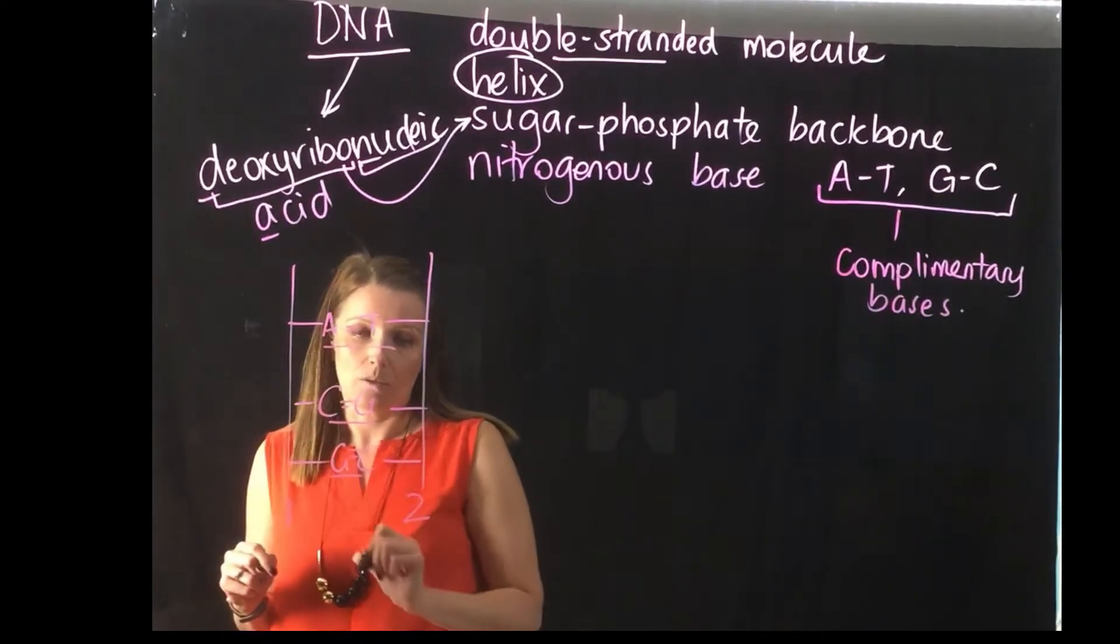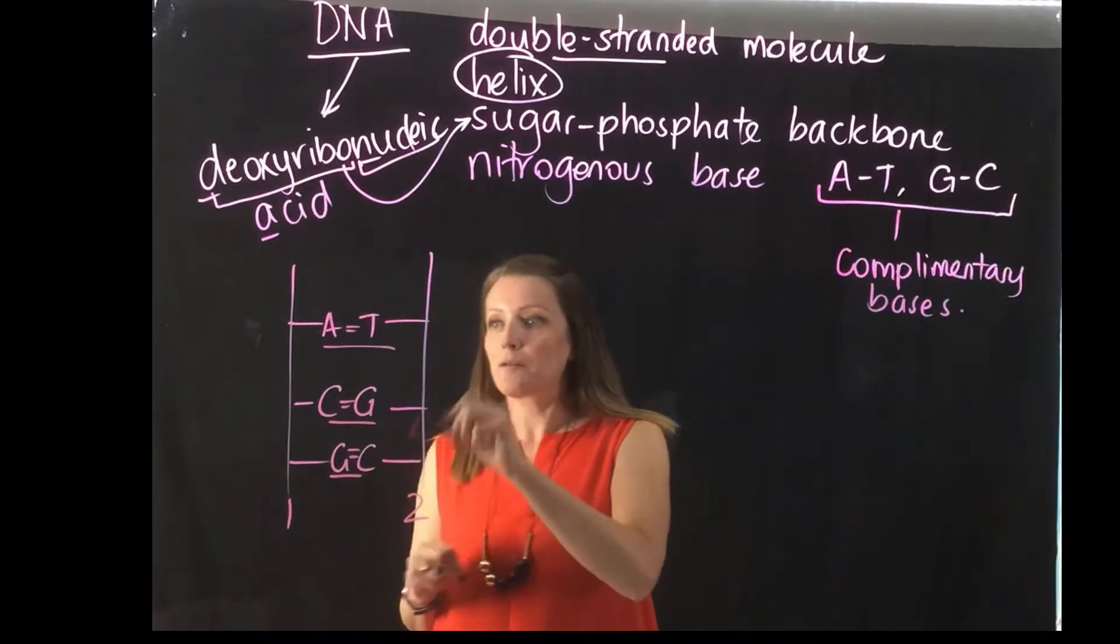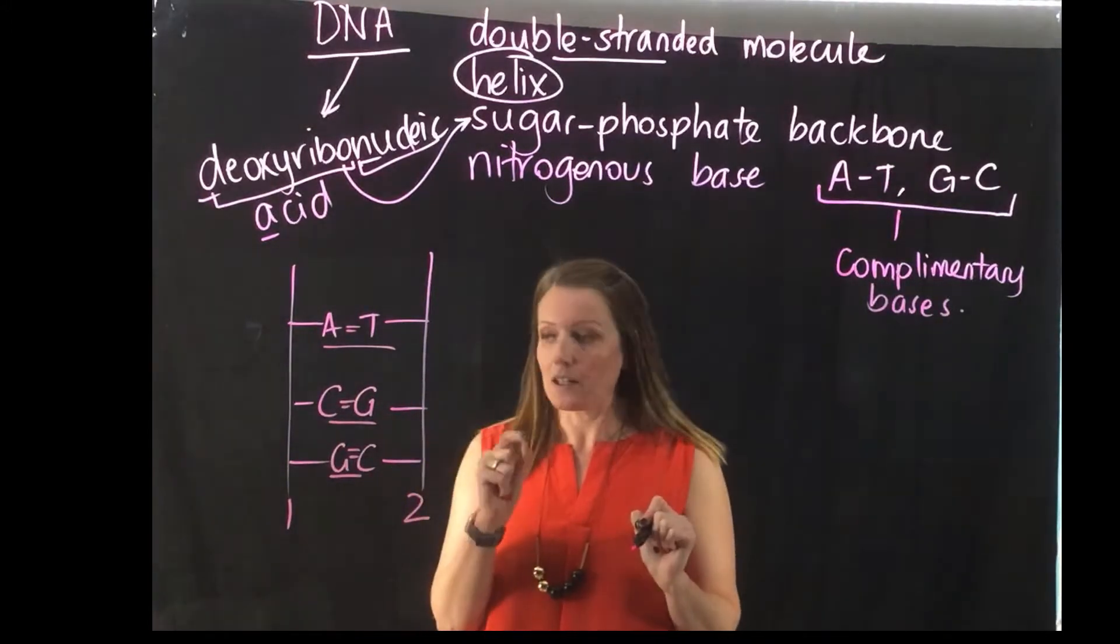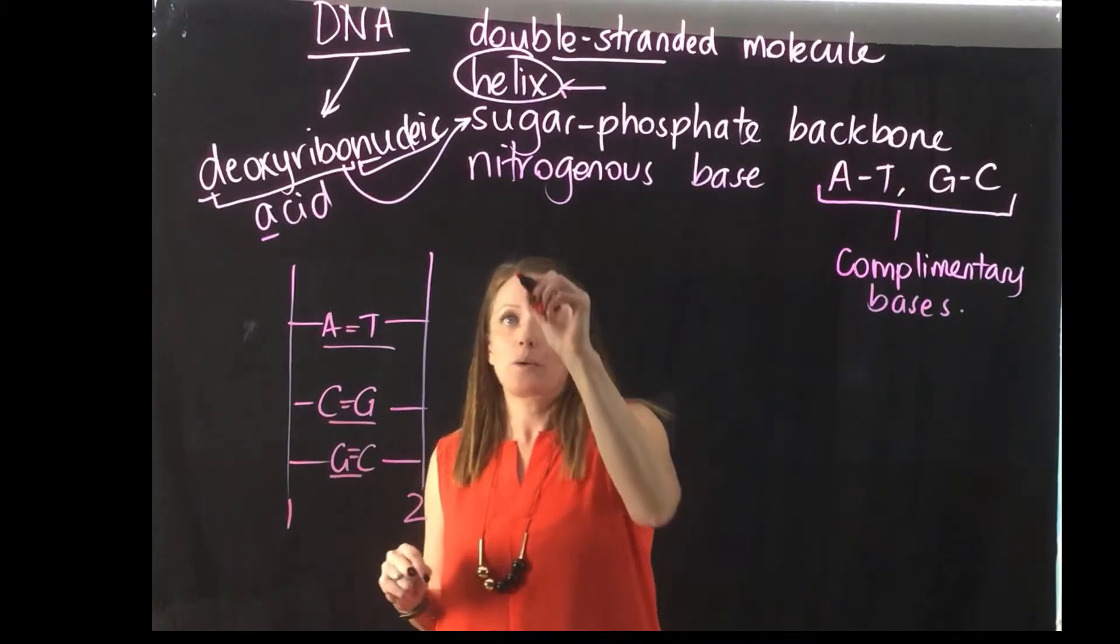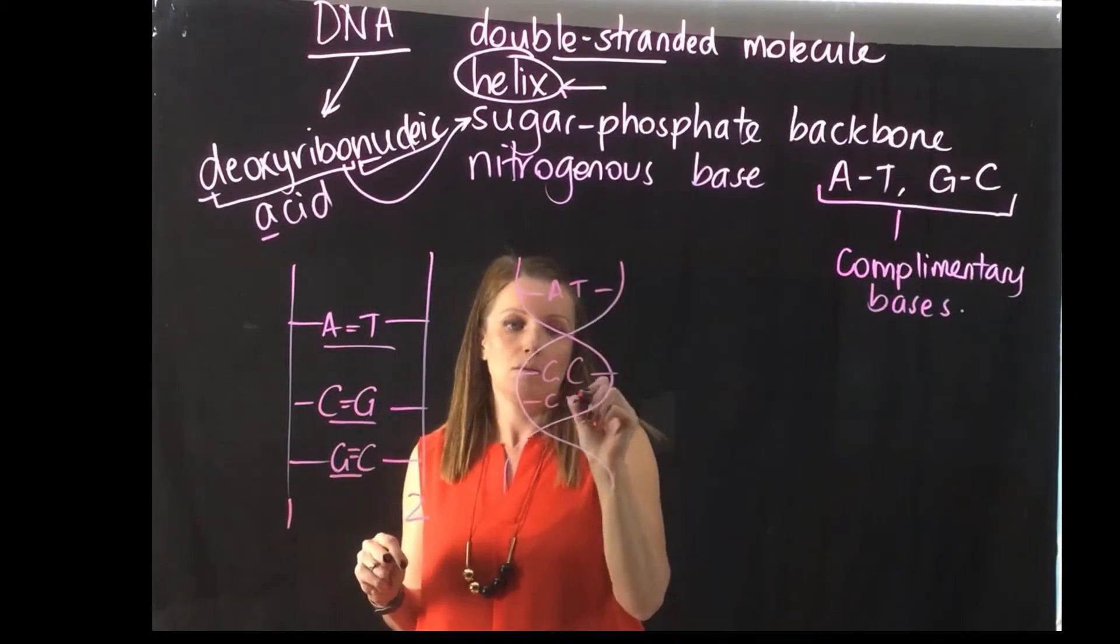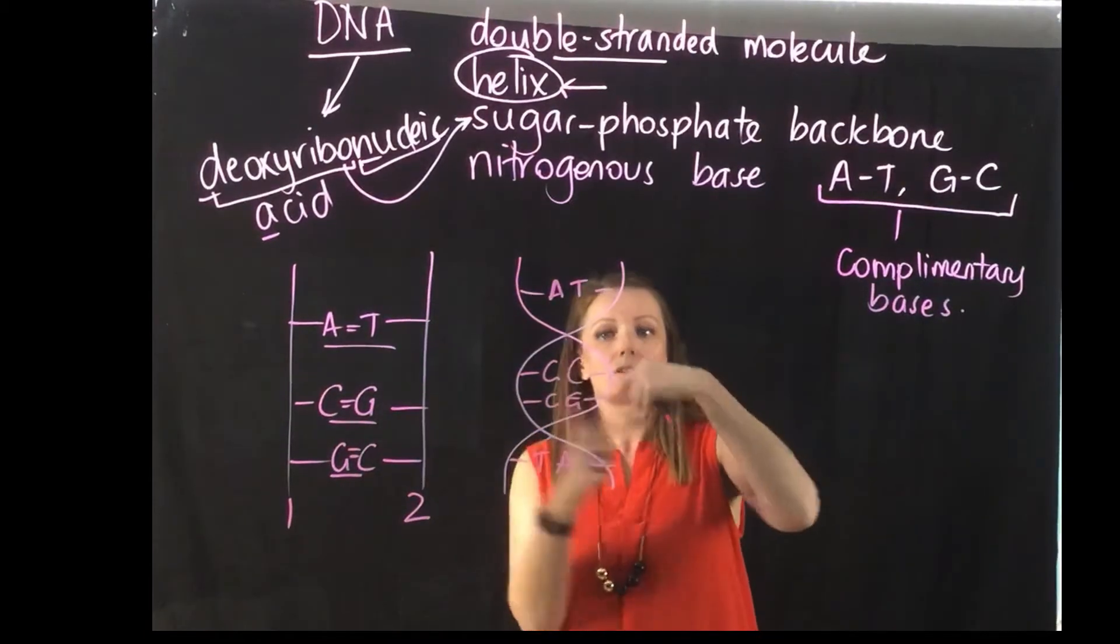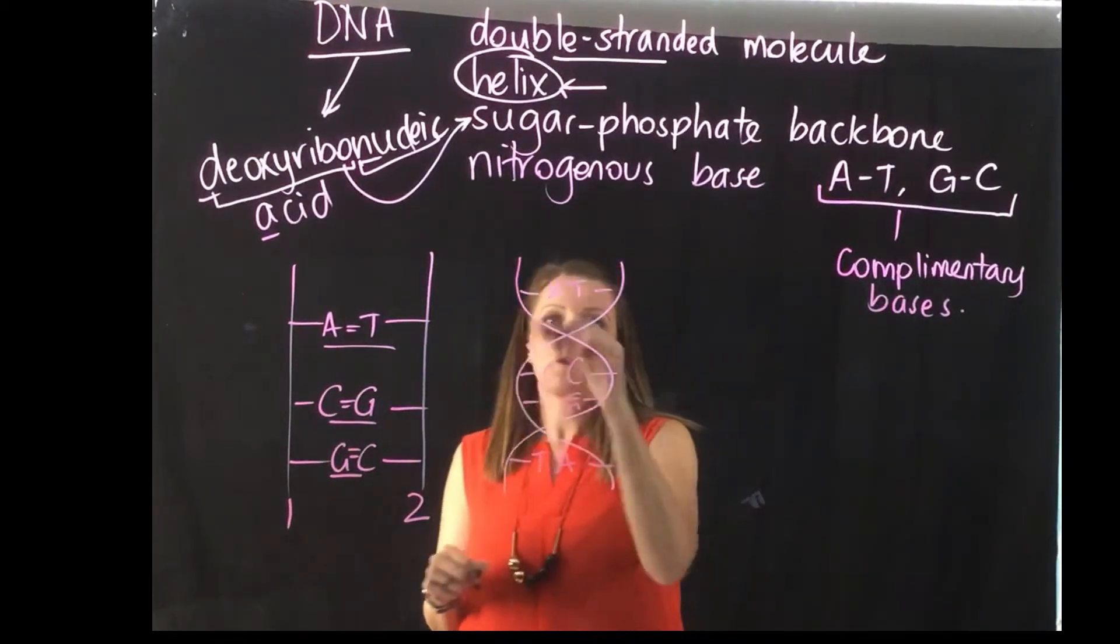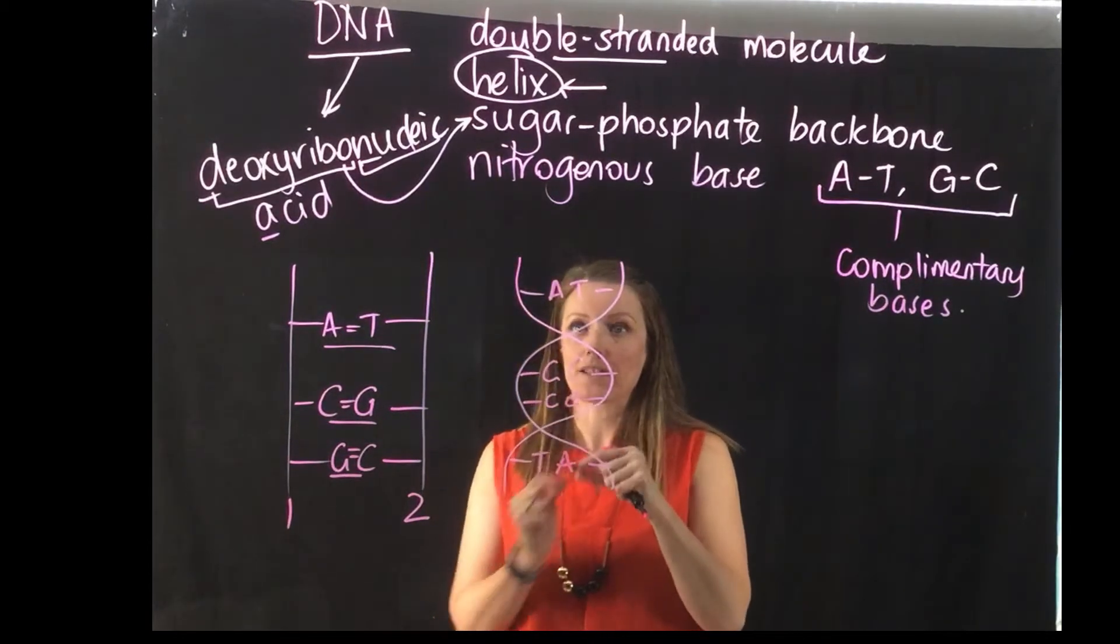They're bonded together by hydrogen bonds. In order to be able to fit this massive molecule inside the nucleus of our cell, we need to have it in this helical shape, which means that it's wound around on itself. It gets wound up on itself and then spun up on itself again over and over again in order for it to be able to fit into such a very small space.